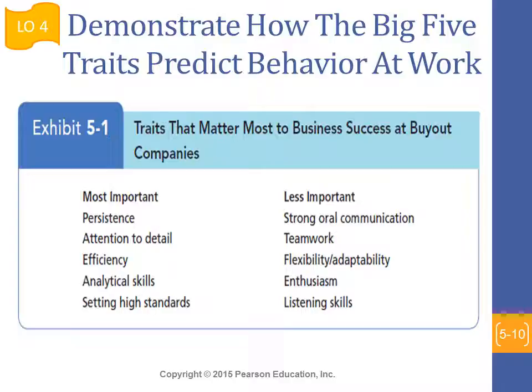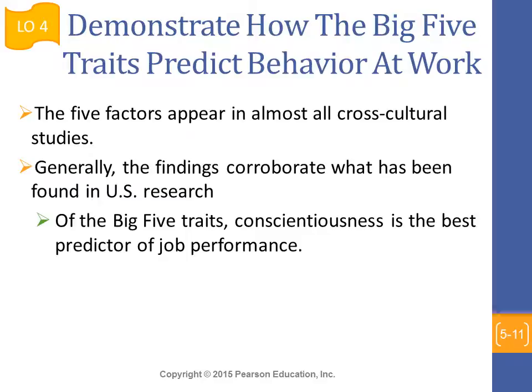Research shows that when looking for a successful CEO of a multi-million or multinational dollar company, the more important personal traits to look for within conscientiousness are persistence, attention to detail, efficiency, and analytical skills. The less important ones identified among successful CEO candidates are teamwork, flexibility, adaptability, and enthusiasm. We should note these are relatively less important, but in no way are they not crucial for the success of any functional head of a company.